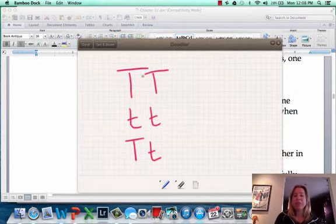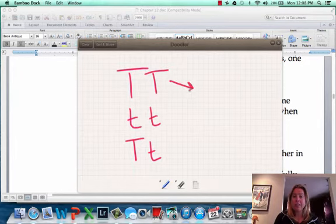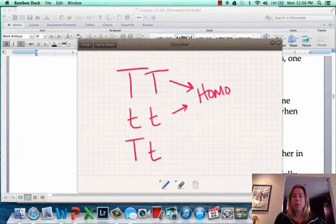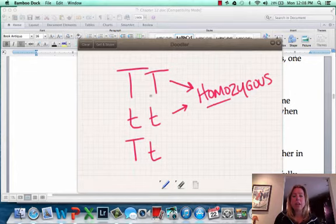Now, the dominant we're using a capital letter for, and the recessive we're using lowercase. In both of these cases, these are going to be what we call homozygous. Homo means same - you have two of the same.